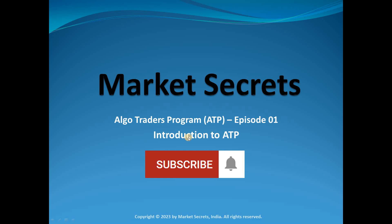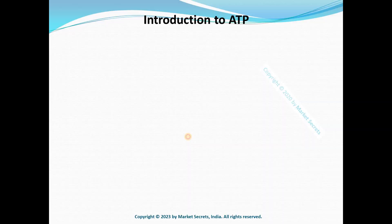Market Secrets welcomes everyone to the Algo Traders Program, otherwise called ATP. The objective of this series and ATP course is to create a passive trading setup using algos or bots which can be used to trade on the stock market every day. This series will serve as a prequel or precursor to the ATP course, giving detailed insights into what the course covers.